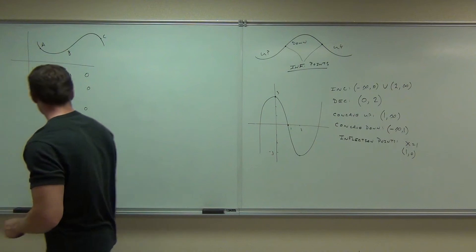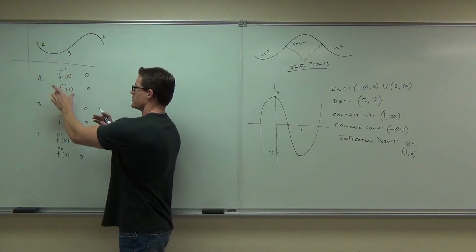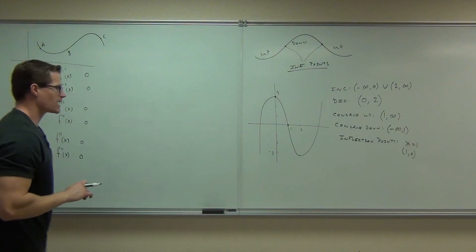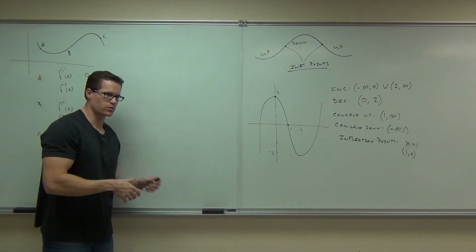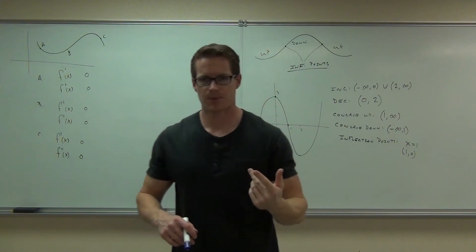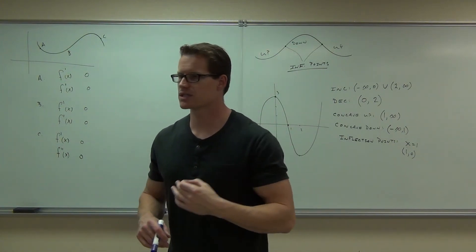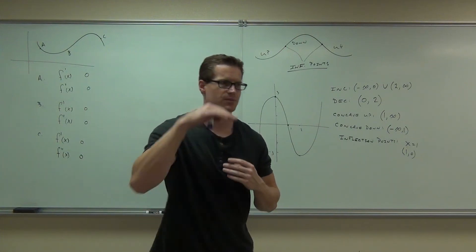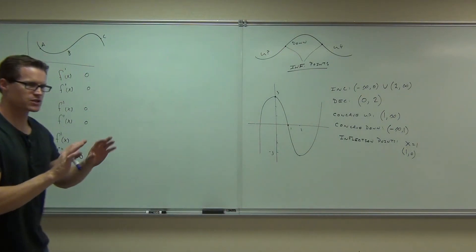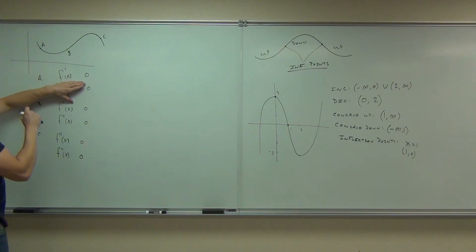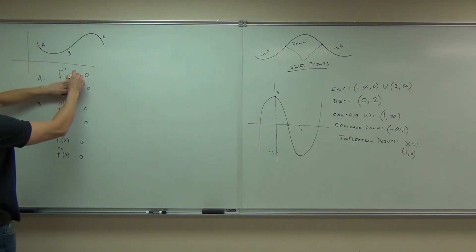Now at each point, I want to determine whether our first derivative and second derivative are positive or negative. Let's look at point A. The first derivative means slope — it says whether I'm increasing or decreasing. If the first derivative is positive, I'm increasing. If the first derivative is negative, I'm decreasing. Is my function climbing or falling at point A? Falling — decreasing. So should this be positive or negative? Negative. The first derivative will be negative there — my slope is less than zero, meaning I'm decreasing.